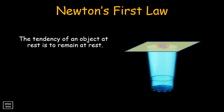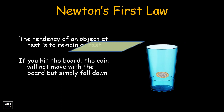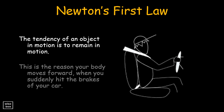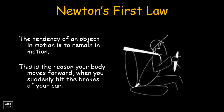The tendency of an object at rest is to remain at rest. If you hit the board, the coin will not move with the board, but simply fall down. The tendency of an object in motion is to remain in motion. This is the reason your body moves forward when you suddenly hit the brakes of your car.